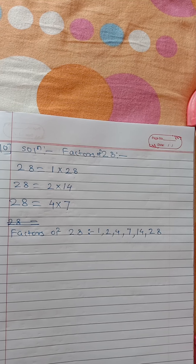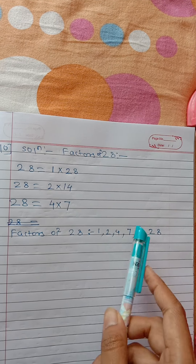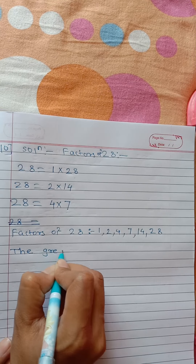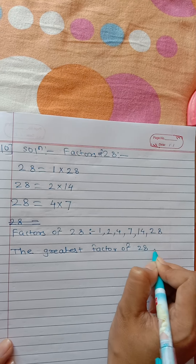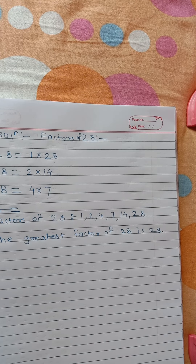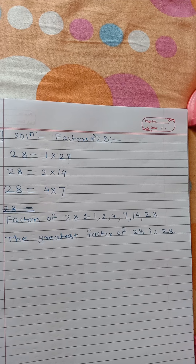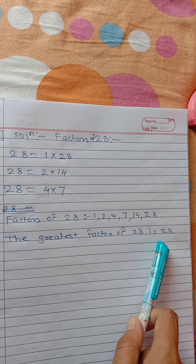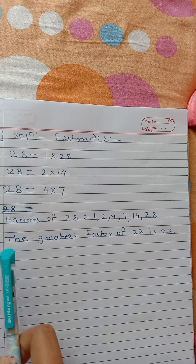Now we have to find the greatest factor. Among all these numbers — 1, 2, 4, 7, 14, 28 — which is the greatest? Yes, 28 is the greatest number. So the greatest factor of 28 is 28 itself.